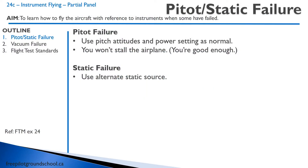You can also have a pitot-static failure — for example, a pitot failure where you've lost your airspeed indicator, which is pretty easy to deal with. All you do is have the pitch attitudes as normal and set your power as normal. Most students get really worried about this. I had a pitot failure one time as a new private pilot and I was worried about stalling the airplane and came in really fast. You don't need to worry about stalling — you have enough experience that you know when that airplane is going to stall.